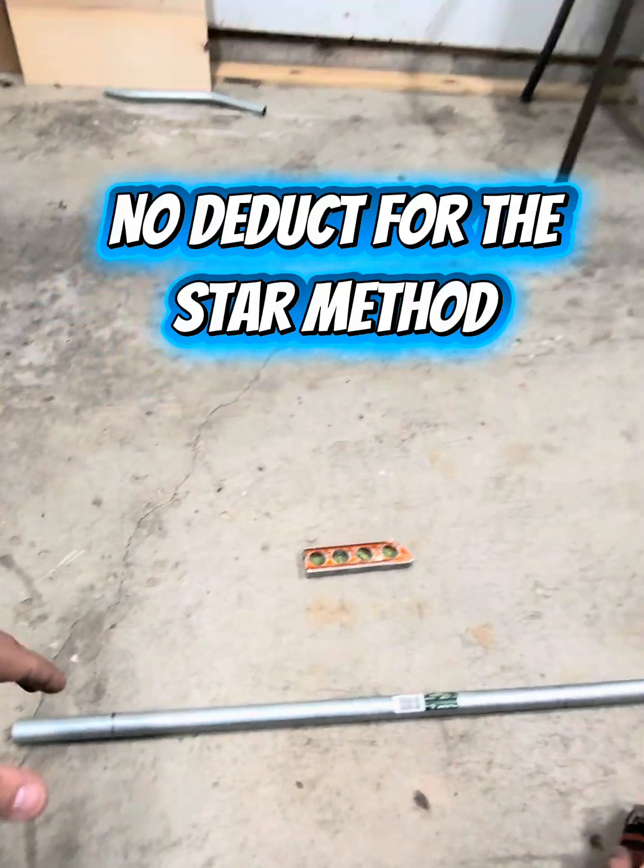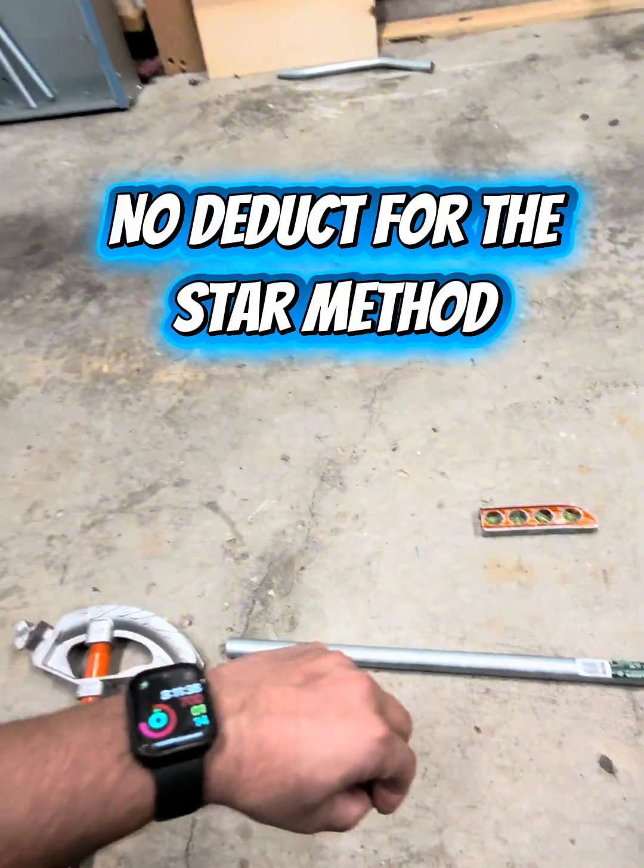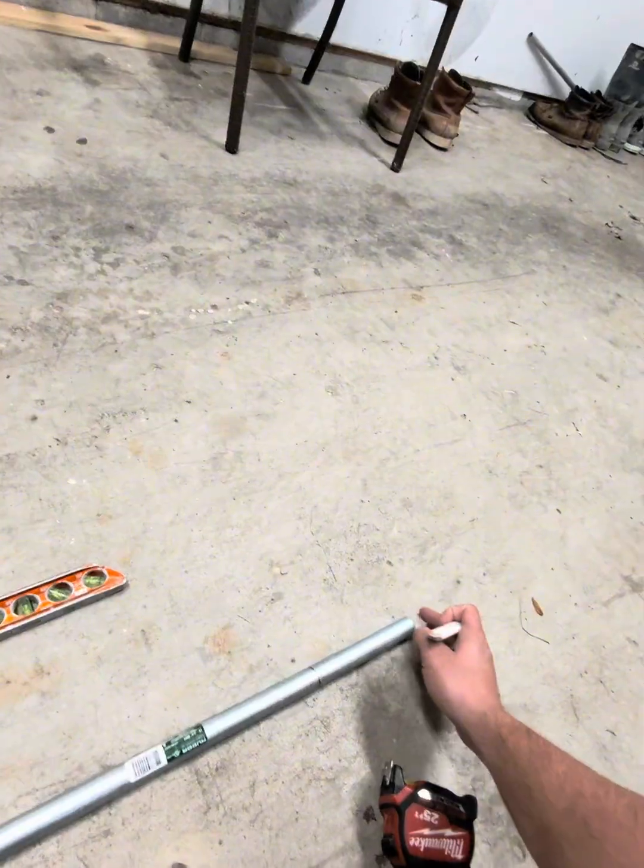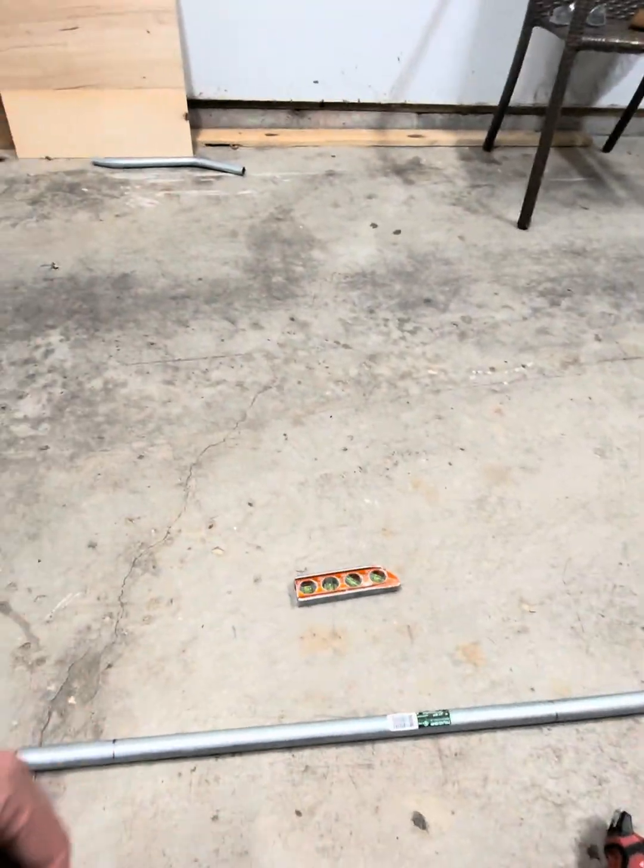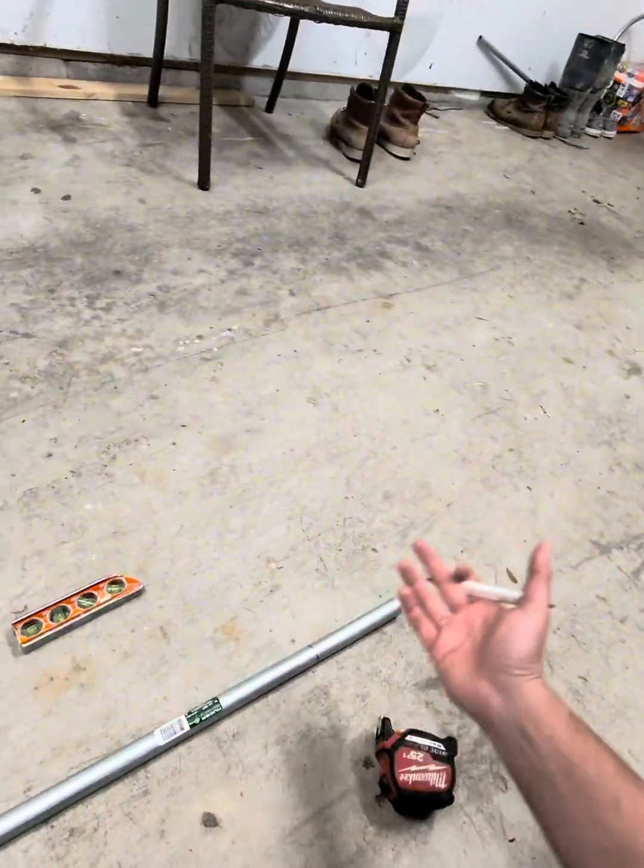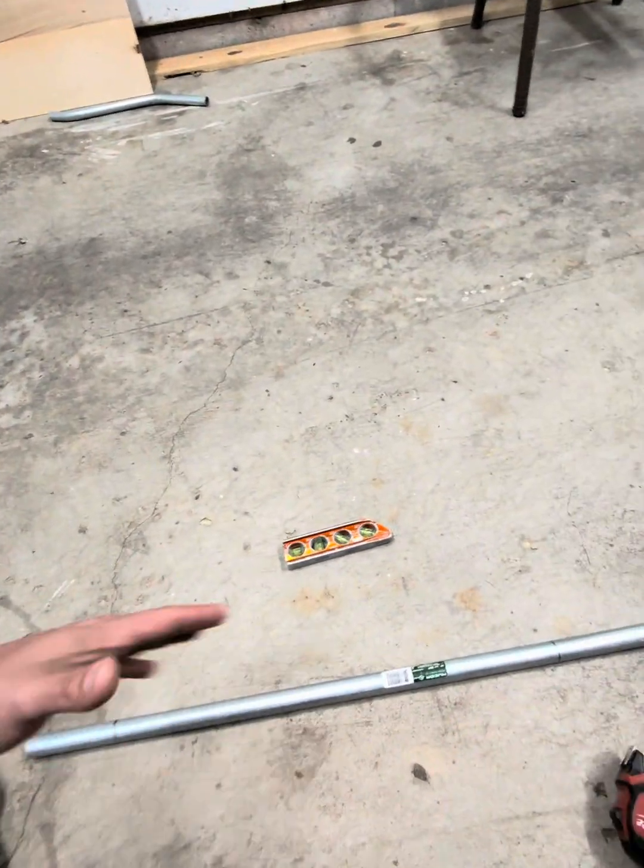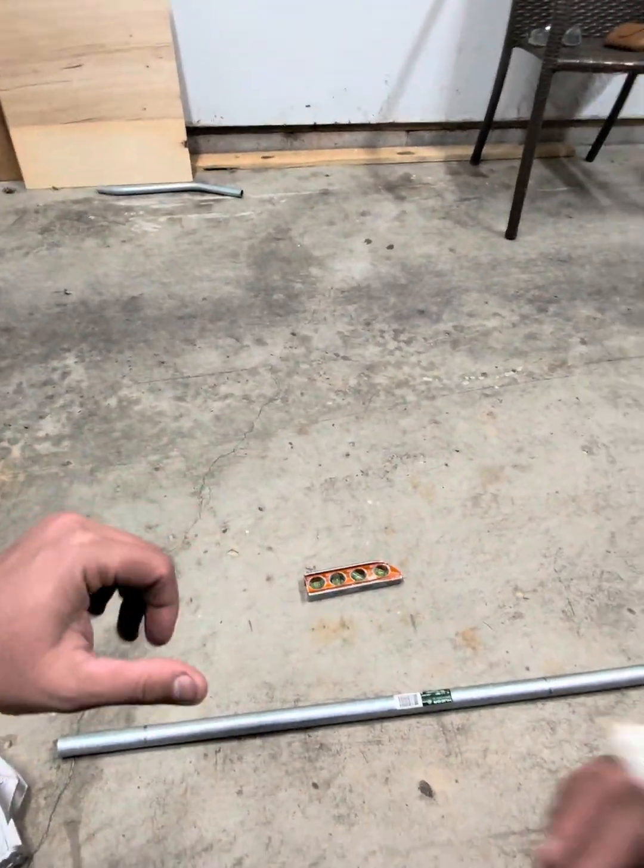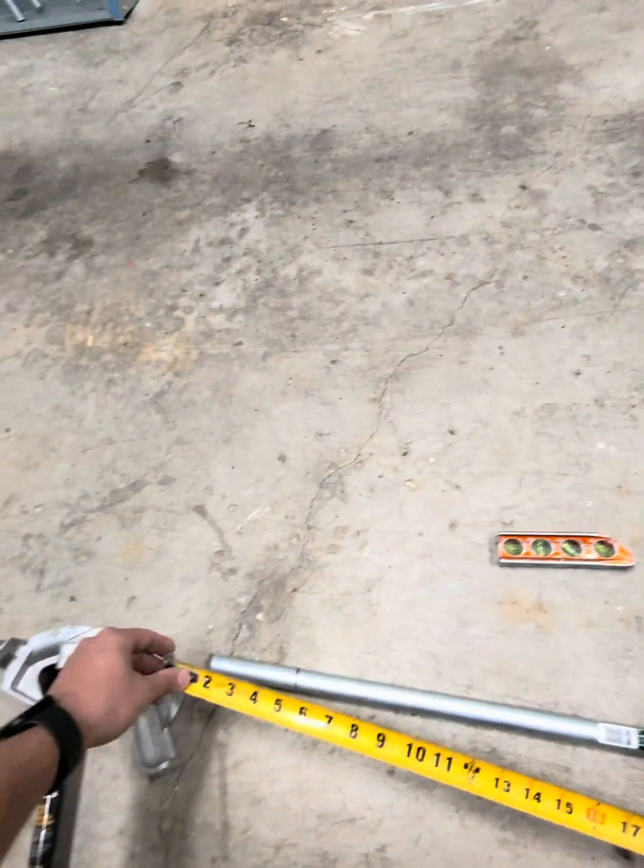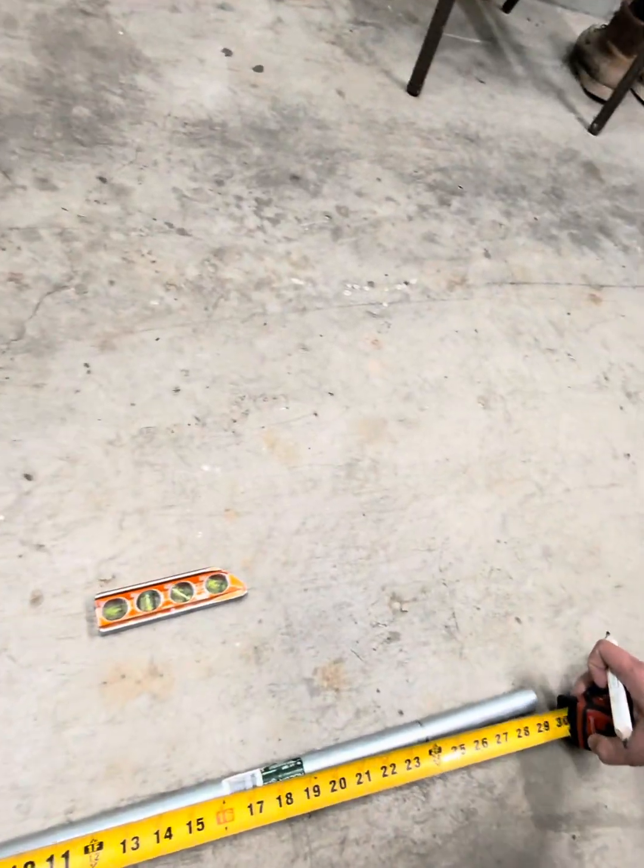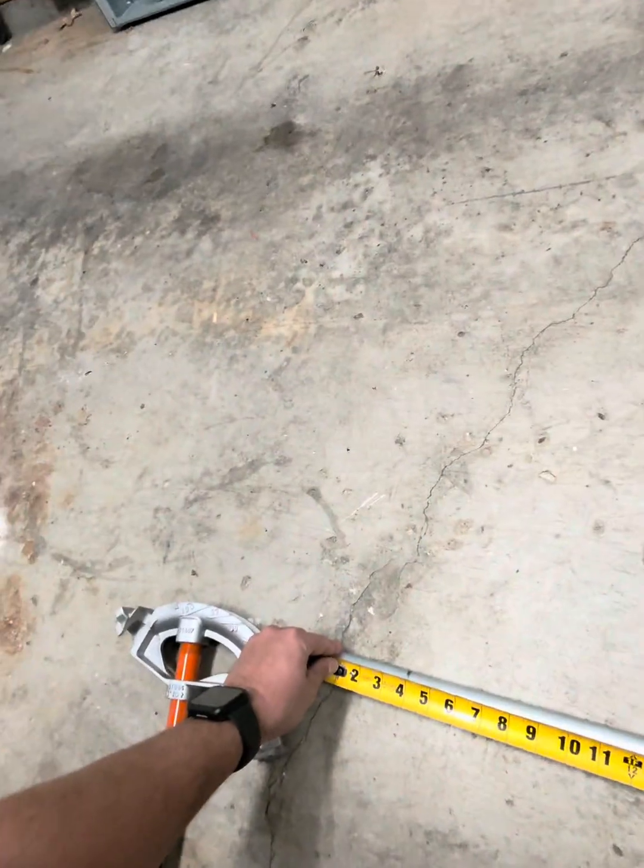So with the star method, there is zero deduct. Let me just say we have a 29 and a half inch piece of conduit, and I say hey Rob, that's my imaginary friend over there, I need a 24 inch 90 off that piece you have there. What are you going to do? So I say 24 inch 90 on the star method. This is when this would come into play. The star method has zero deduct. There is no deduct.